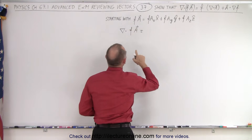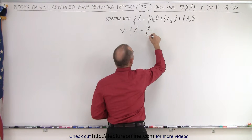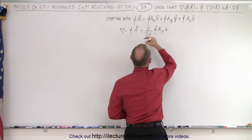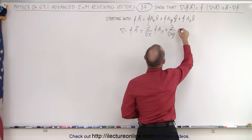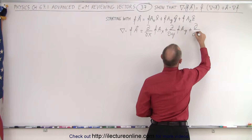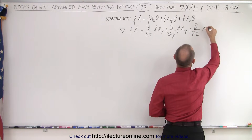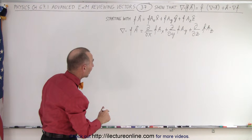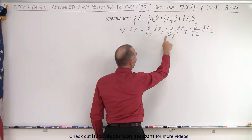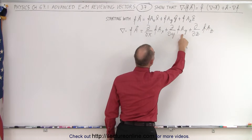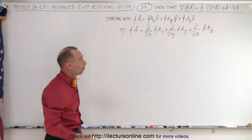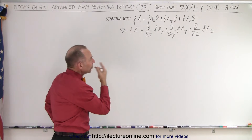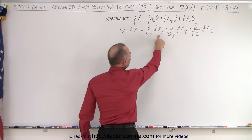When we take the divergence of that, this is going to be equal to the partial with respect to x of f times A sub x, plus the partial derivative with respect to z of f times A sub z. We simply multiply the partial derivative with respect to x, y, and z with each of the components of the vector, with the additional product of f times the vector components. Now we need to take the partial derivative of a product.